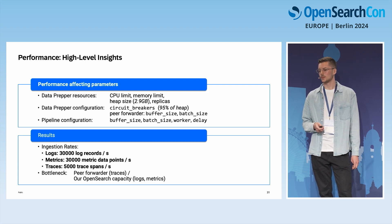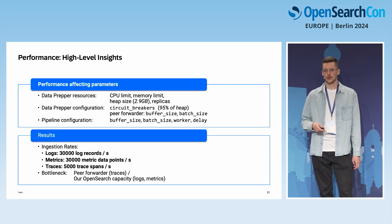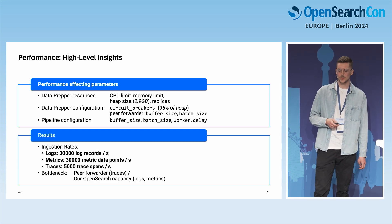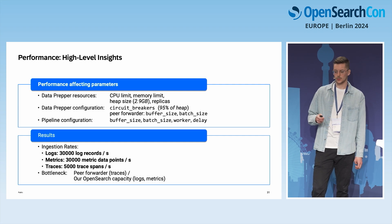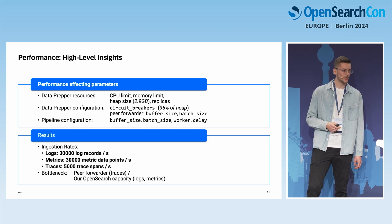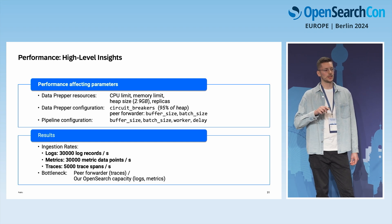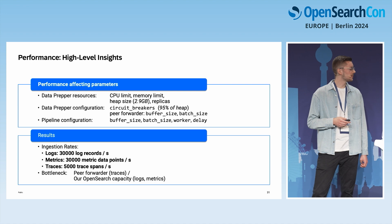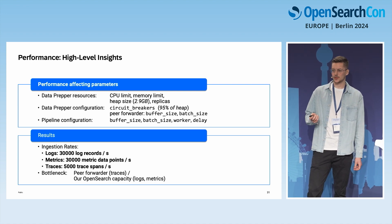Regarding the core configuration of DataPrepper, we have the peer forwarder and circuit breakers. One interesting thing about circuit breakers: you set them to a memory value — if heap utilization reaches that level, circuit breakers reject incoming signals. Setting it to 100% wouldn't make sense since it would already be too late. You need a gap between the circuit breaker threshold and the heap maximum. But you also don't want the gap too large, as that leaves unutilized heap space. In our case, we set it to 95%, which worked out quite well.